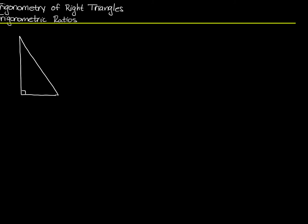If I take either of the other two angles and label it theta — that's the most common use of an angle name in trigonometry, although there are others — then I've got three sides as they relate to theta. There's the side opposite theta, and there's the side next to theta, and we call that adjacent.